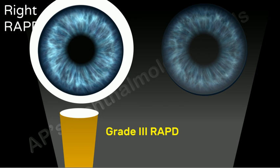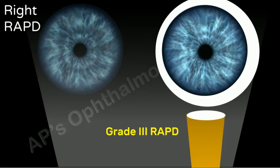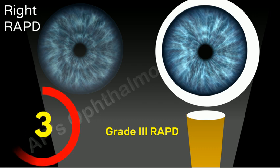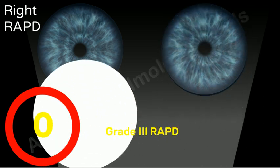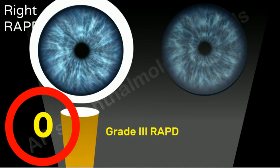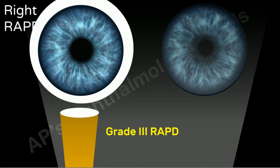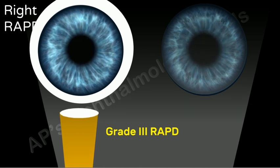Now if you get a grade 3 RAPD, further evaluation is required to determine whether it is really a grade 3, grade 4, or a grade 5. Shine the light in front of the left eye for 6 seconds. This results in relative bleaching of this eye, thereby making it weaker, and this eye now behaves as if a neutral density filter has been placed over it. When the light is now swung to the right eye, note what happens — the grading system is as follows.